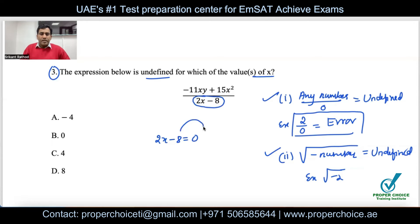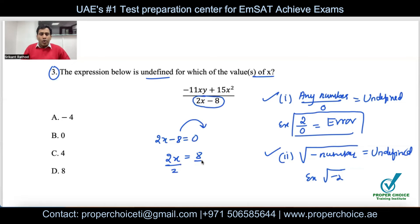Setting the denominator equal to zero means finding the value of x that makes it zero. Simplifying gives 2x = 8. When we move a term from one side to the other, the sign changes. To isolate x, divide both sides by 2.